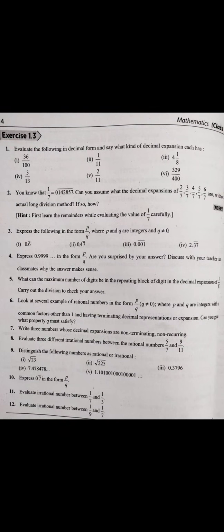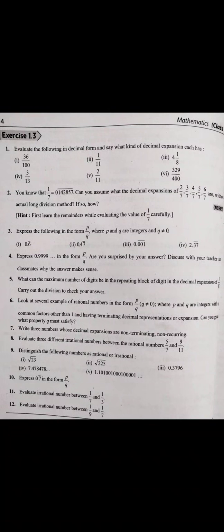The second type of non-terminating is non-terminating non-repeating. In non-repeating, the remainder never becomes 0, and the digits also do not repeat. For example, 22 upon 7 — when you try dividing it, the remainder will never be 0 and the digits will also not repeat. So 22/7 is an example of non-terminating non-repeating decimal expansion.